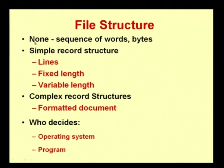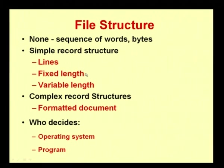The first file structure type is 'none' — a sequence of words stored in bytes with no structure. The second type is a simple record structure. In a simple record structure, inputs are typed in lines with a fixed length — for example, in Microsoft Word, text gets typed up to 72 character columns, which is called fixed length.